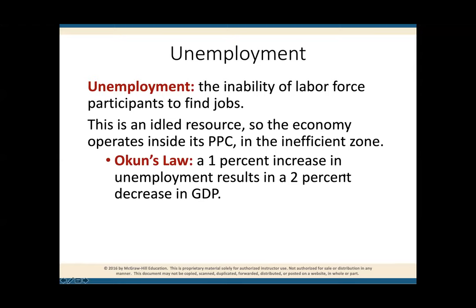Studies have been made to figure out exactly what is the impact on the economy when we have people out of work. There was an economist by the name of Arthur Okun. He made a longitudinal 100-year study to figure out the correlation between unemployment and economic growth. He discovered that for every 1% increase in unemployment, GDP is going to be affected by 2% in the opposite direction. So if unemployment increased by 1%, the economy is going to contract by 2%.